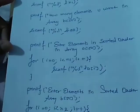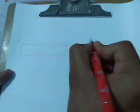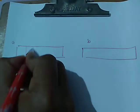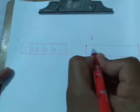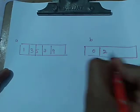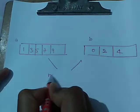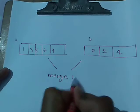Now we move forward to the next program. Our next program is to merge the elements of two arrays. We have two arrays — array 1 contains elements 1, 3, 5, 7, 9 and array 2 contains elements 0, 2, 4. We have to merge these arrays.